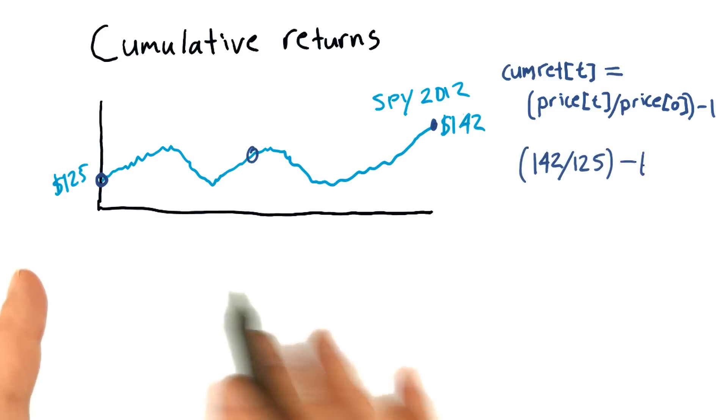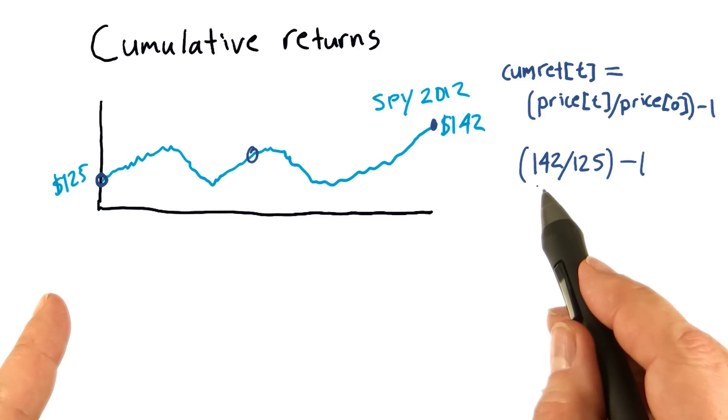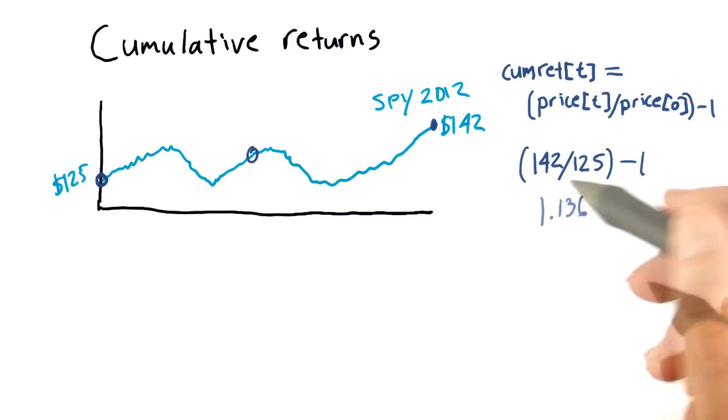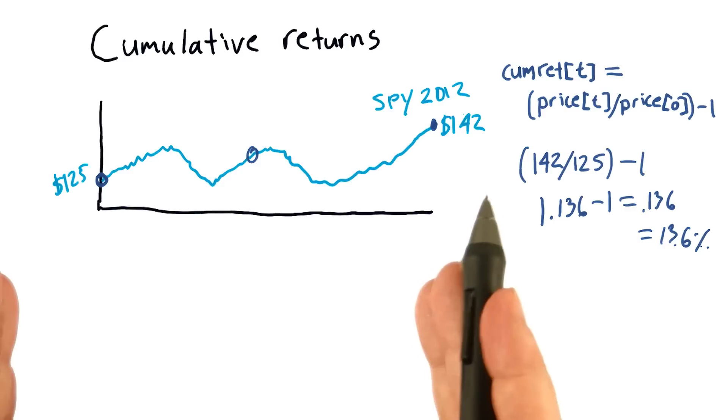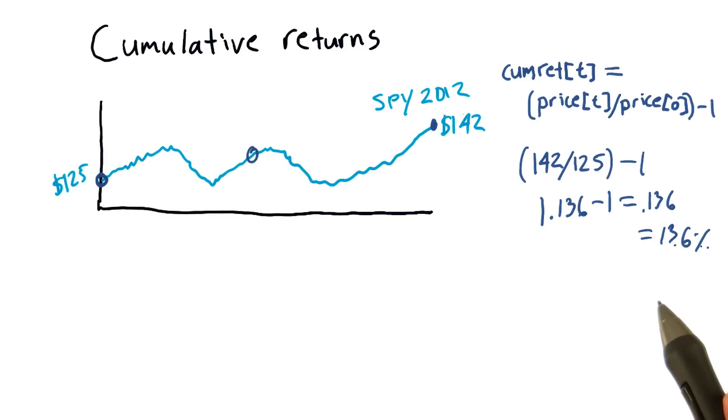To calculate the cumulative return for this whole year, it's the price at the end divided by the price at the beginning minus one. Turns out 142 divided by 125 is 1.136. Minus one gives us 0.136, which is equal to 13.6%. So our cumulative return for the ETF SPY was 13.6%.